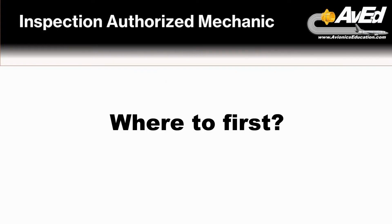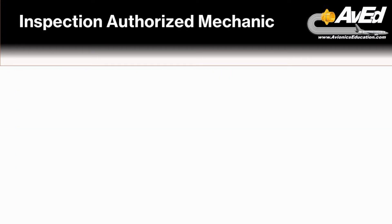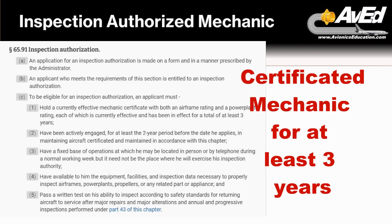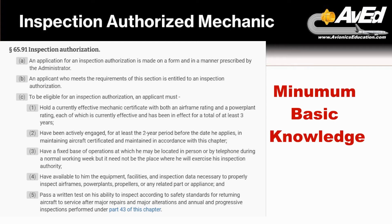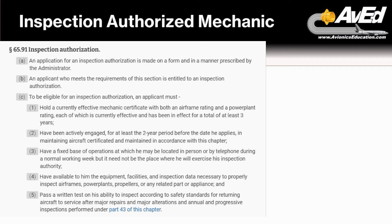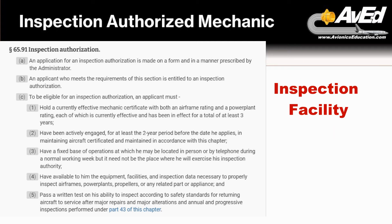To become an IA, you have to go to your local flight standards district office, or it could be an IFO if it's overseas, which are very rare. The minimum requirements are that you have to have been an airframe and power plant mechanic actively working on aircraft for three years. Then you need to interview with the FAA to determine that you have the basic knowledge before you even get authorization to take the exam. The FAA is going to look at whether you have knowledge of inspection material, access to inspection tools and equipment, a facility you could work out of that could be inspected by the FAA, or at least some way for the FAA to contact you during the day.